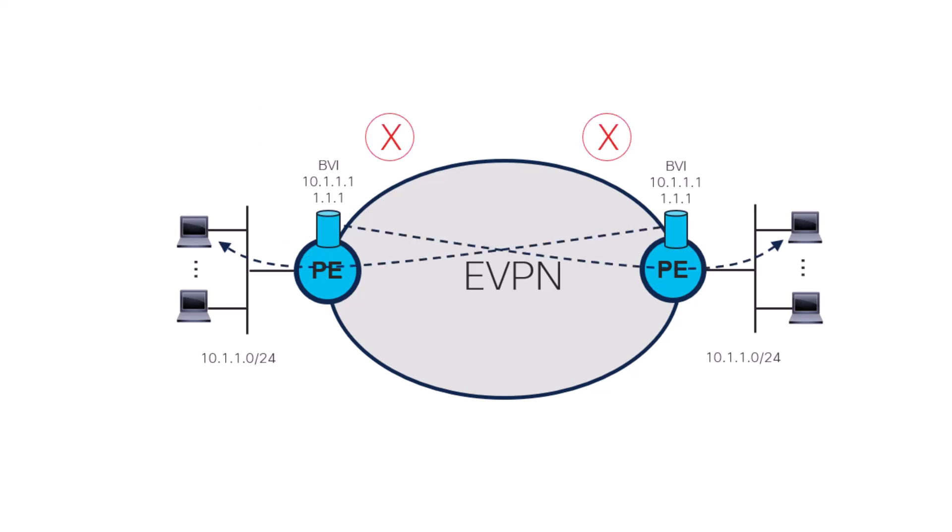Why? It's because although the echo request could eventually reach the remote host, the echo reply is destined to the BVI Anycast address that is used as the source IP for the echo request. When the local PE of the remote site receives the echo reply, it consumes the packet since it's destined to one of its addresses. And in the end, the echo reply never reaches the PE that initiated the ping, and the ping is failing.